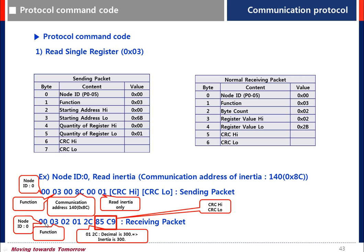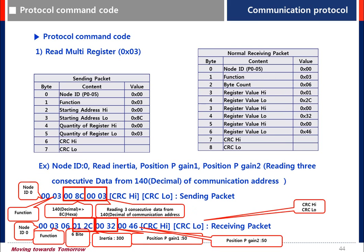For the receiving packet: 00 is the node ID, 03 is the function code, 02 is the byte count, and 001C is the value of the register. Function 02 indicates a read multi-register operation.